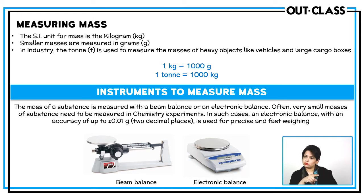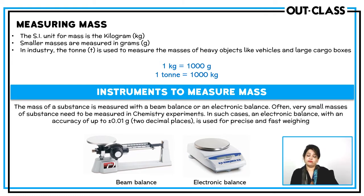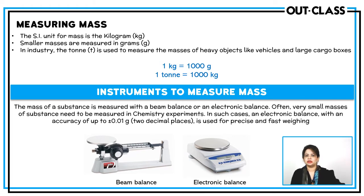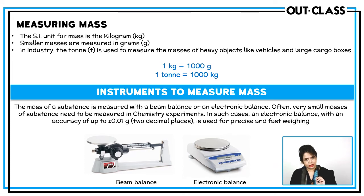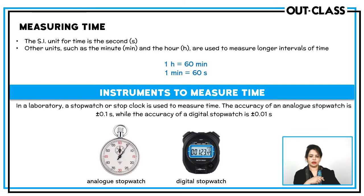In moles, we measure mass in grams. For apparatus, we have the beam balance and the electronic balance. Normally we use electronic balances for measuring mass because they have more accuracy and can measure small amounts of mass very accurately.